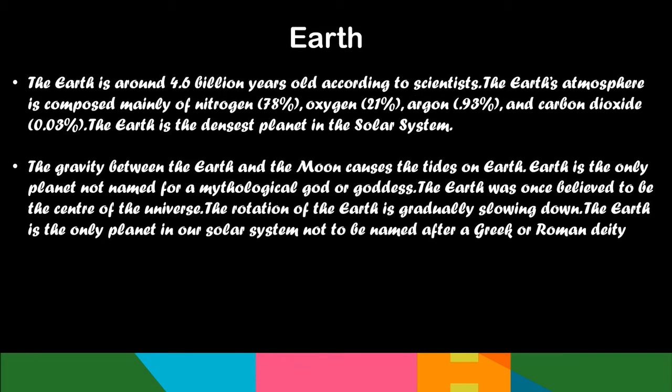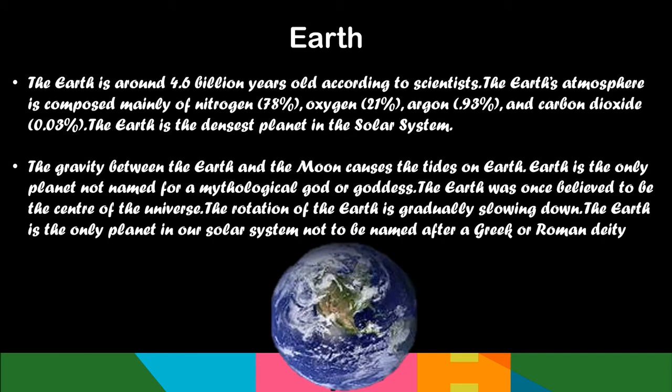Earth. The Earth is around 4.6 billion years old according to scientists. The Earth's atmosphere is composed mainly of nitrogen, oxygen, argon, and carbon dioxide. The Earth is the densest planet in the solar system. The gravity between the Earth and the Moon causes the tides on Earth. Earth is the only planet not named after any mythological god or goddess. The Earth was once believed to be the centre of the universe. The rotation of the Earth is gradually slowing down.